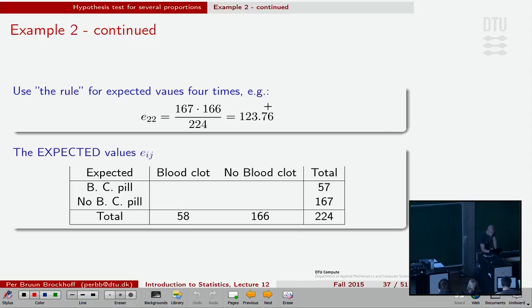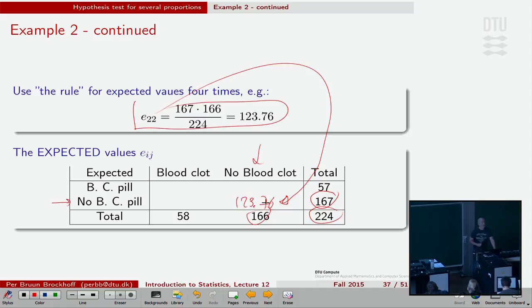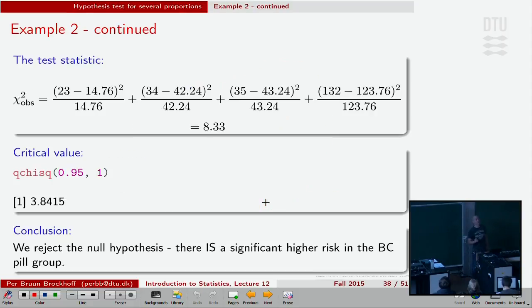Now to compute the expected values. For instance, the E22, the one that should be here—the expected value for the no birth control pill group and the no blood clot outcome would be row total times column total divided by total total, or just total. So that number would be 123.76. And I could do that three times more to get the other numbers. I will not bore you with that right here now. We could combine these and get the other numbers. Those four numbers you see here depicted as part of the chi-square statistics. Here you see the E22 number that we just found. The other three are also on the slide now. I compare those four E values with the four O values by the chi-square statistic.